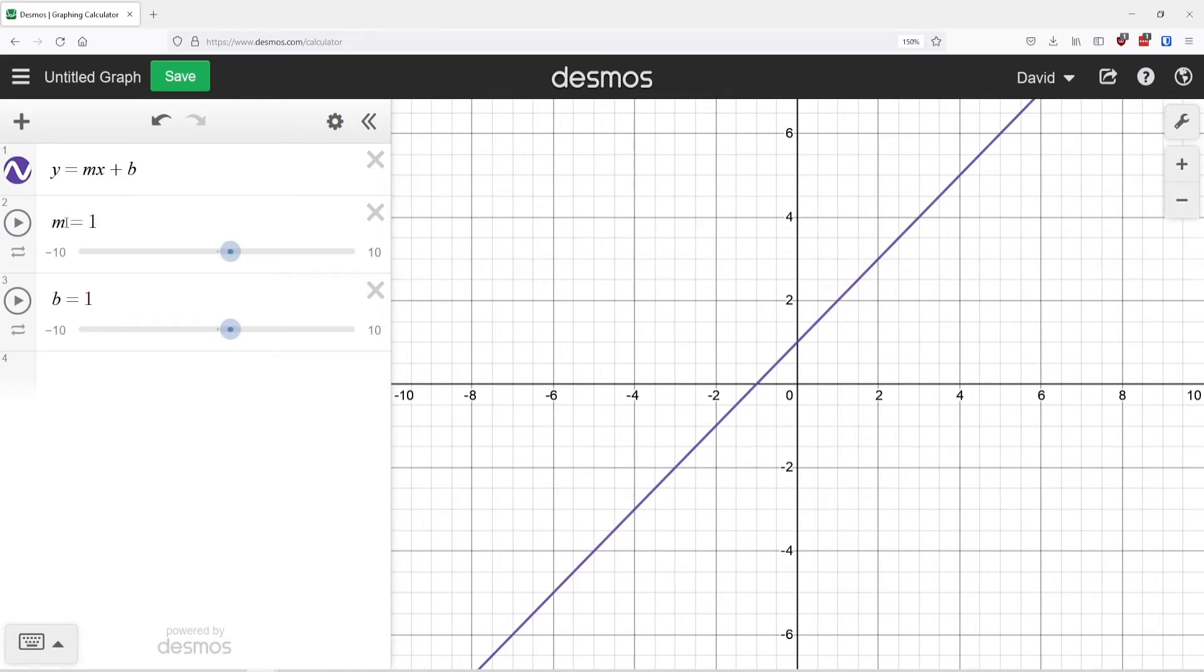If you notice, this one is saying, okay, m is 1 and b is 1. So if I plug those in, this is really creating the equation y equals 1x plus 1. And I drew a graph for that. I can then slide these. And if you notice, I can make this like b equals 4. And now this is the equation y equals 1x plus 4 or y equals 2x plus 4. And I can manipulate them if I want.